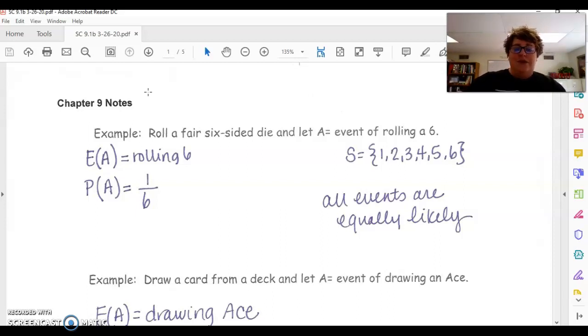So the first one, the event of rolling a 6, the probability of that is you have one option to roll a 6 out of 6. So your probability is 1 over 6. Now, if we looked at the probability of rolling a 1, 2, 3, 4, 5, or 6, all of those are 1 out of 6. So all of their events are equally likely.